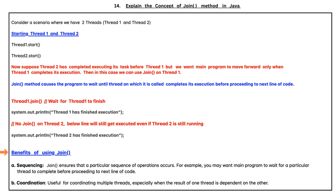Benefits of using the join method: The first benefit is sequencing. The join method ensures that a particular sequence of operations occur. For example, you may want the program to wait for a particular thread to complete before proceeding to the next line of code. The second benefit is coordination. The join method is useful for coordinating multiple threads, especially when the results of one thread are dependent on the other.